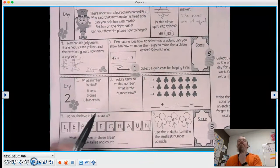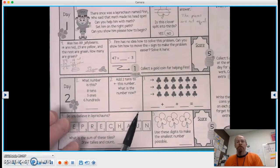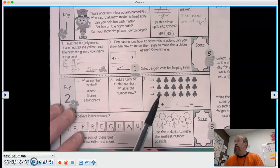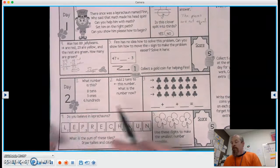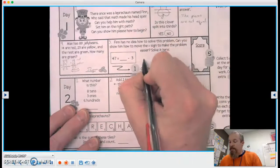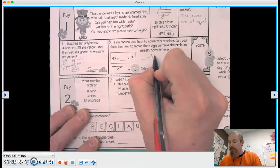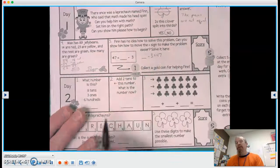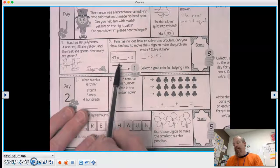And number five, Finn has no idea how to solve this problem. Can you show him how to move the equal sign to make this problem easier and then solve it here? So a lot of times what we'll do is we'll say this number minus three equals 47. We just get a little confused when the equal sign is on that side.